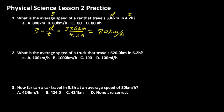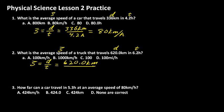Question two: what is the average speed of a truck that travels 620 kilometers in 6.2 hours? Again, that's a distance and that's a time. So basically it's the same problem, just different numbers. Average speed equals distance divided by time, and that becomes 620.0 kilometers divided by 6.2 hours. When we work that out, it comes to 100 kilometers per hour.